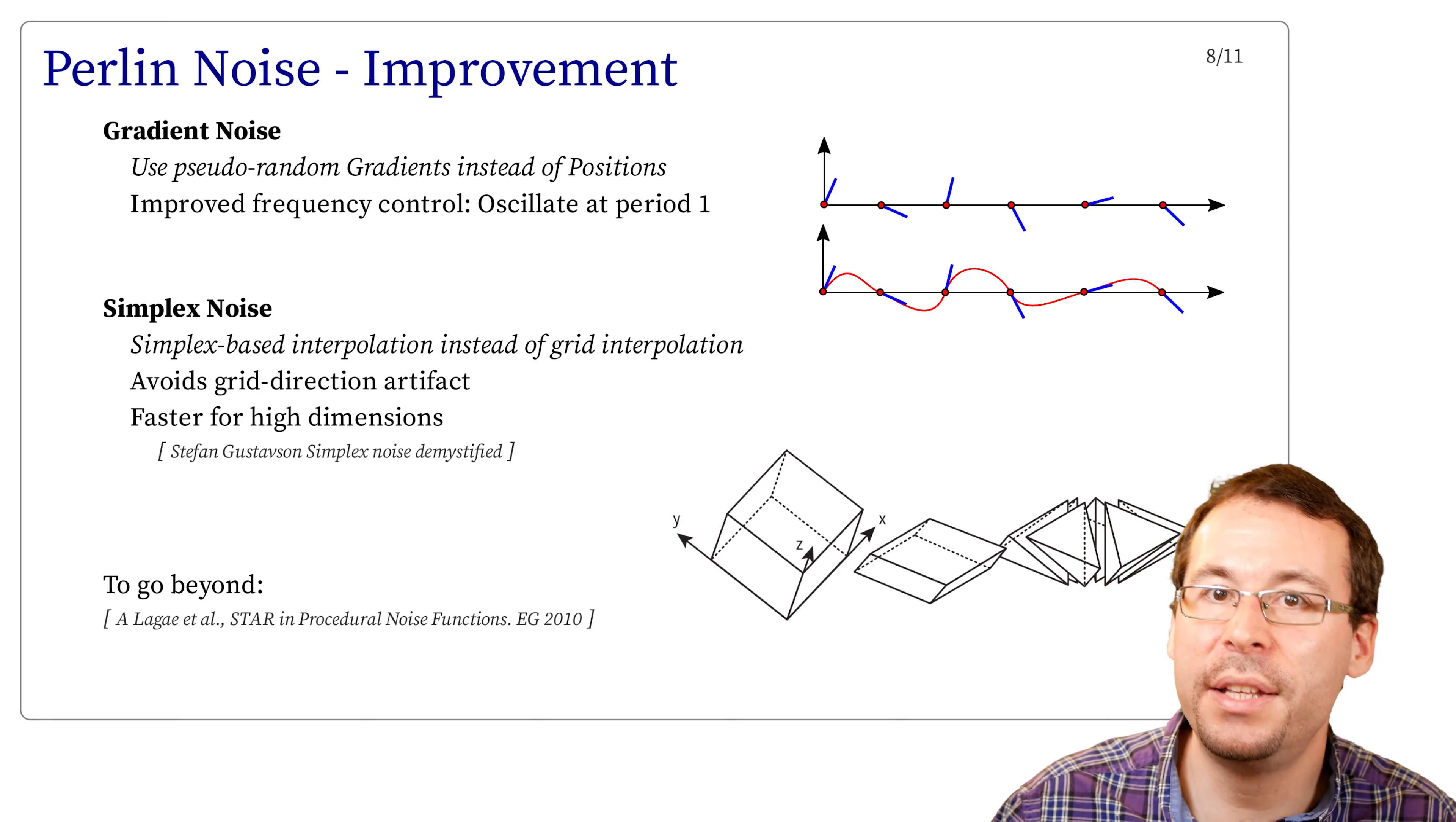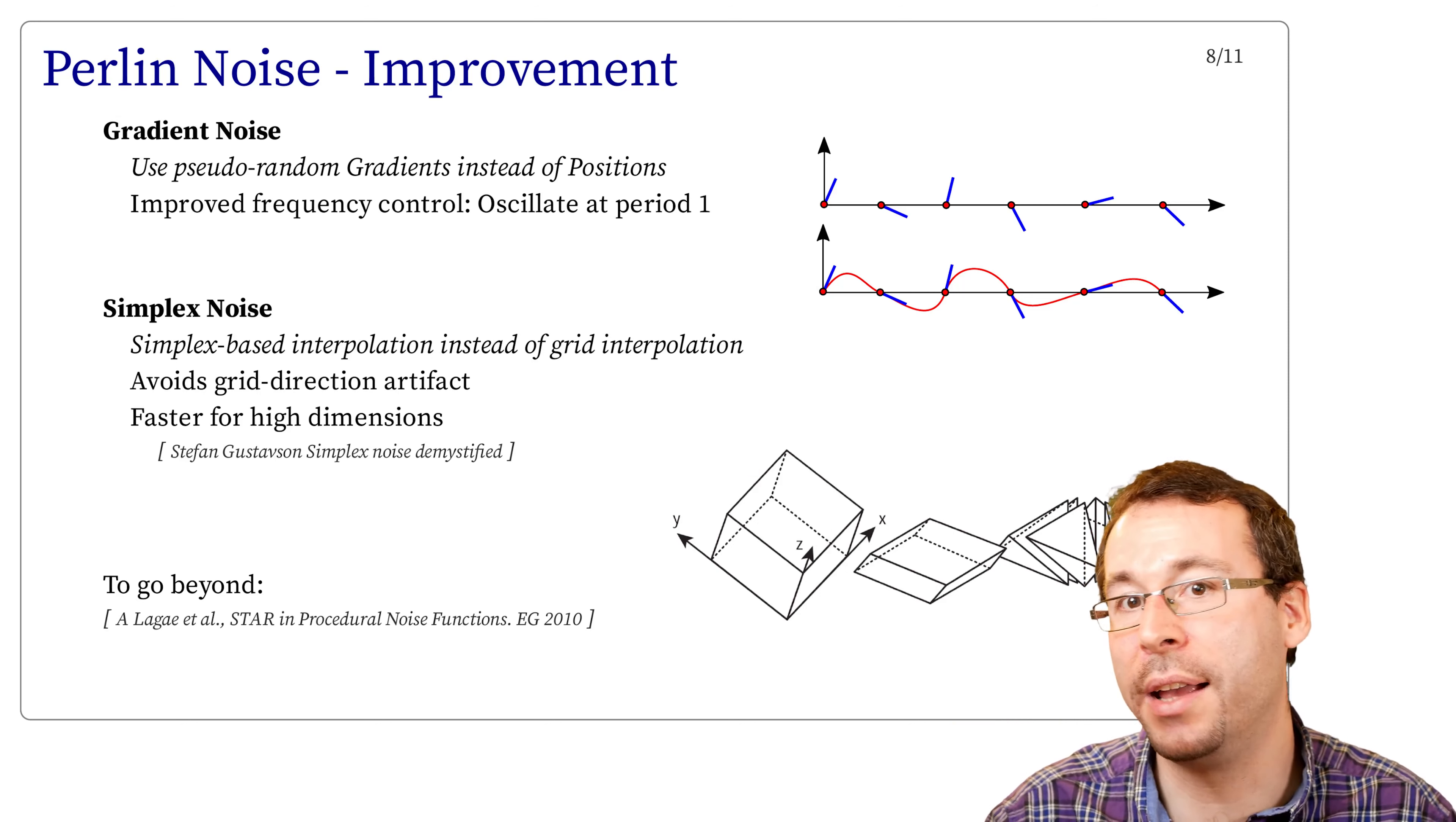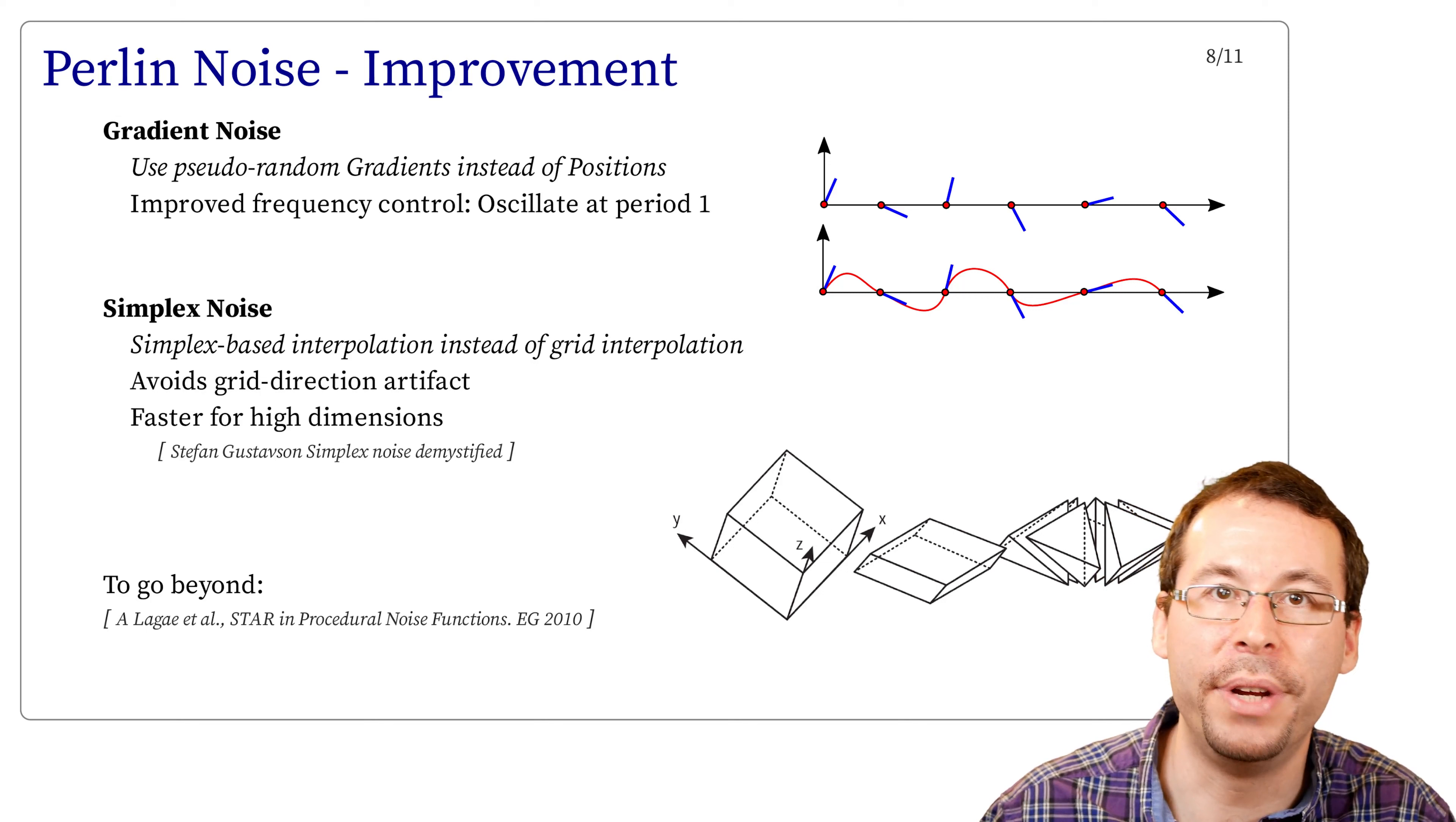The second improvement is the use of the so-called simplex noise. Instead of interpolating the values on a grid, in 2D, 3D, and so on, we decompose the space into simplexes, which is triangle in 2D, tetrahedron in 3D, and so on. And then we interpolate on these simplexes. This avoids grid directional artifacts, and it's also faster to perform in high dimensions compared to grid interpolation.